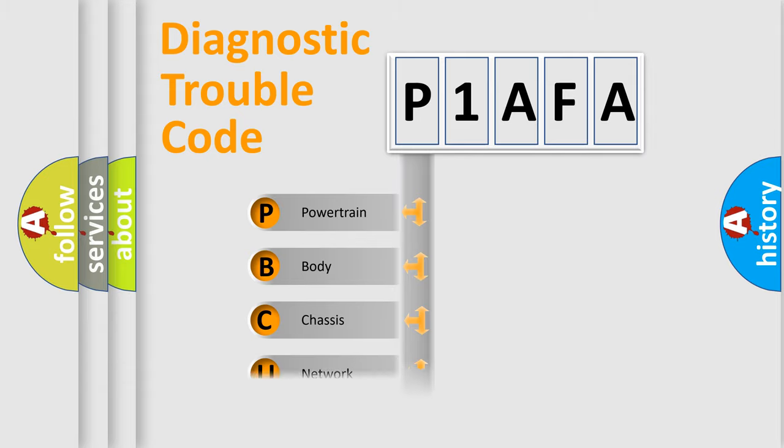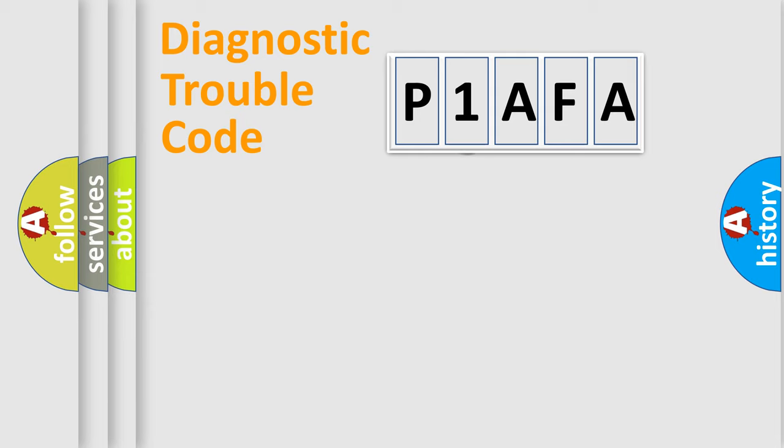Powertrain, Body, Chassis, Network. This distribution is defined in the first character code.